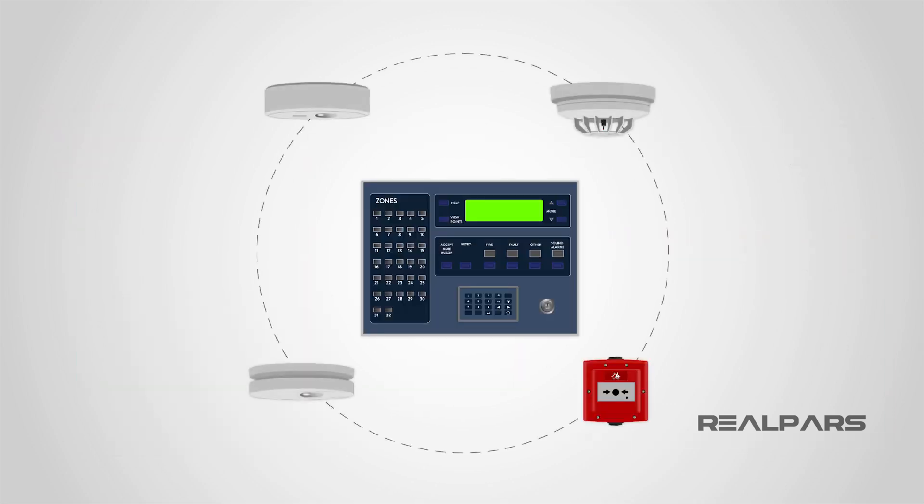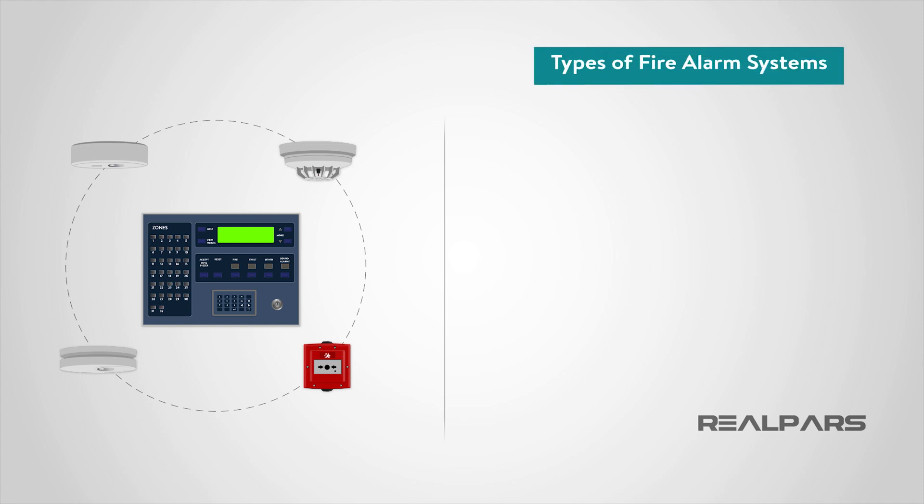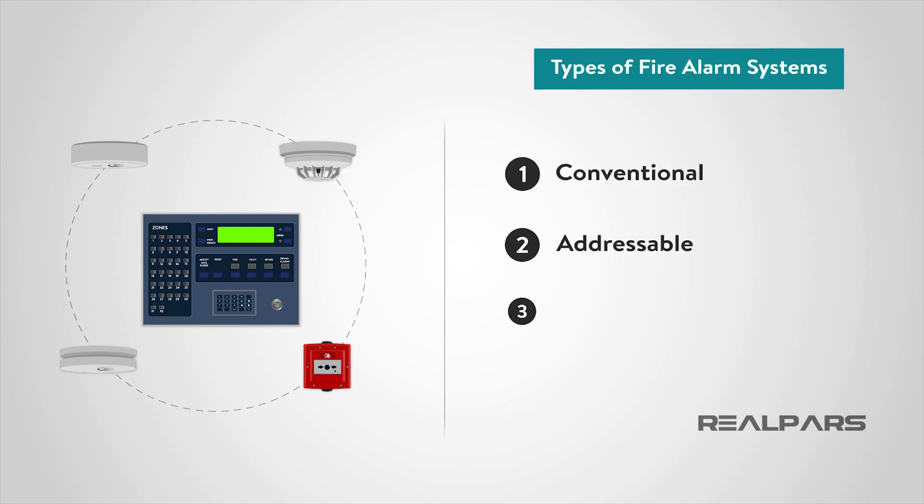Fire alarm systems can be broken down into four main types: conventional, addressable, intelligent fire systems, and wireless systems. Let's spend some time considering each.